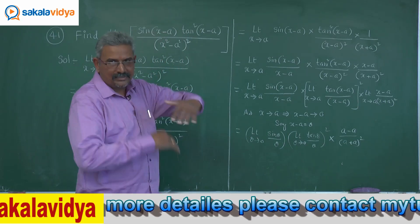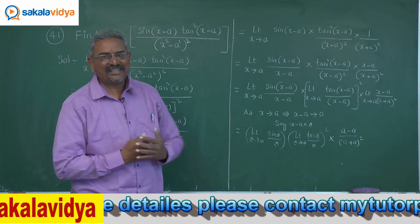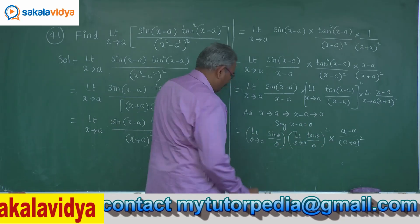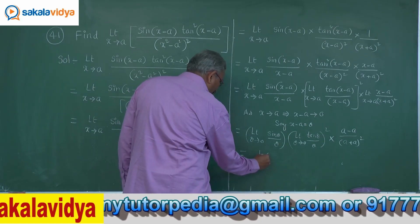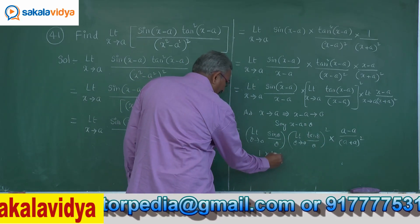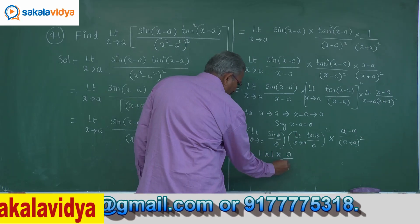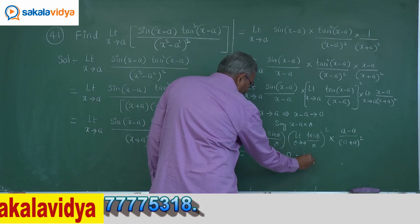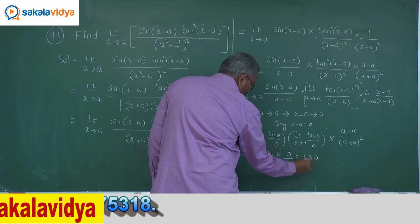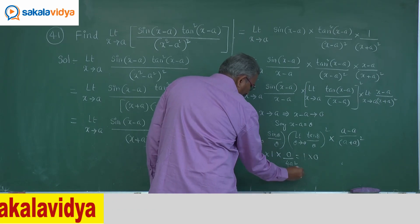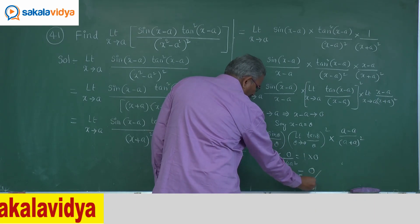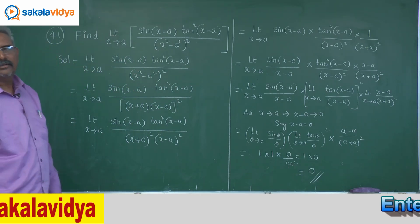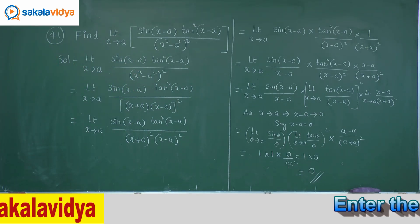Now let the limit be applied and substituted. Substituting, we get (a minus a) by (a plus a) whole square — very interesting. Now you can expect the further step very easily. This is 1, and this is 1, and 1 squared is 1. Then 0 by 2a whole square is 4a square. So 1 multiplied by 1 multiplied by 0 — one into something, zero into something, is 0. So obviously the answer is 0.